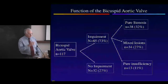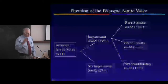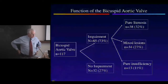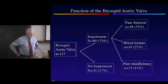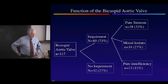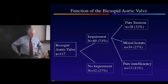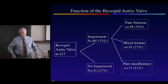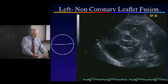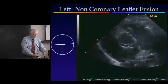Our valve population had 117 patients. There was impairment in 73% and no impairment in 27%. Pure stenosis accounted for 32%, mixed lesions 27%, 11% were pure insufficiency, and the rest were not calculable.